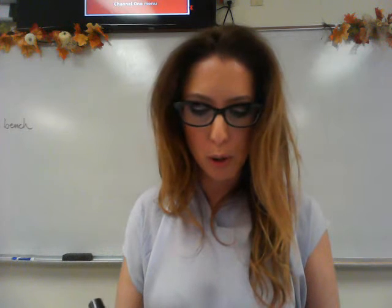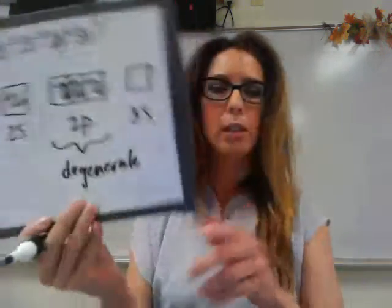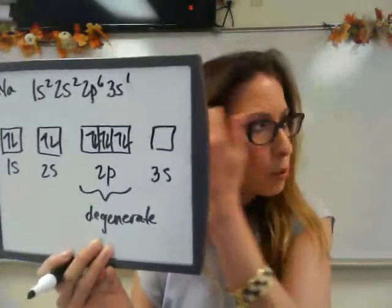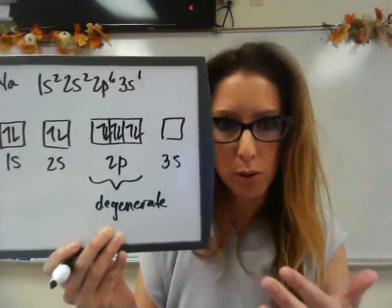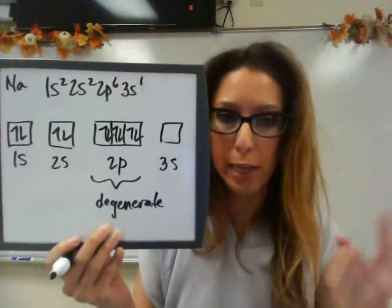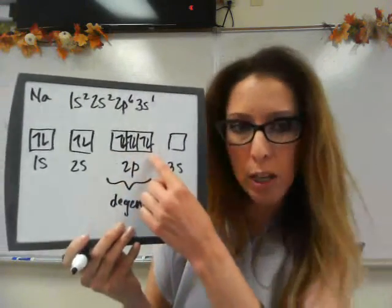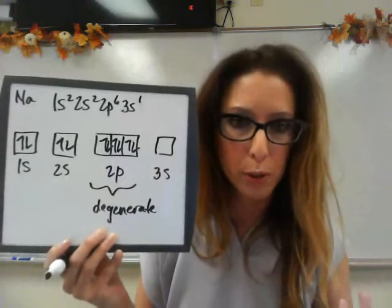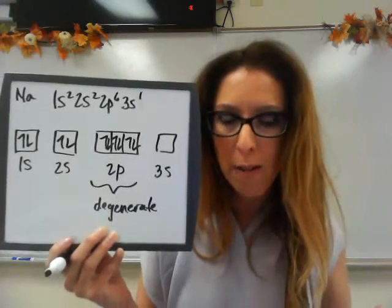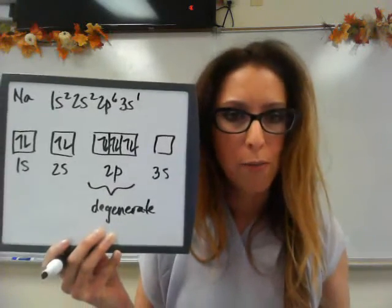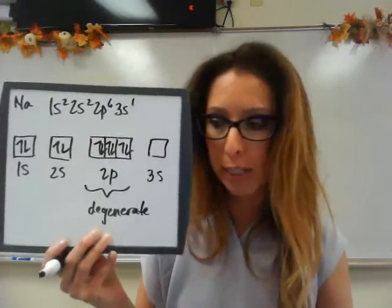This is called Hund's Rule: each orbital must be occupied singly with one electron before you can double it up. This applies to degenerate orbitals — orbitals that have the same energy. The three P boxes (2P, 3P, 4P, etc.) are degenerate. For D sublevels (3D, 4D, 5D), there are five boxes holding 10 electrons total, and those are also considered degenerate.